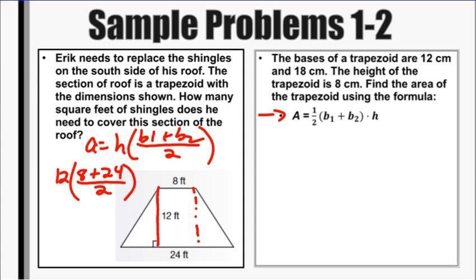So I have twelve on the outside. Eight plus twenty-four is thirty-two. Divided by two. So half of thirty-two is sixteen. So I have twelve times sixteen. And twelve times sixteen would give us a hundred and ninety-two. So we would have 192 square feet of shingles.